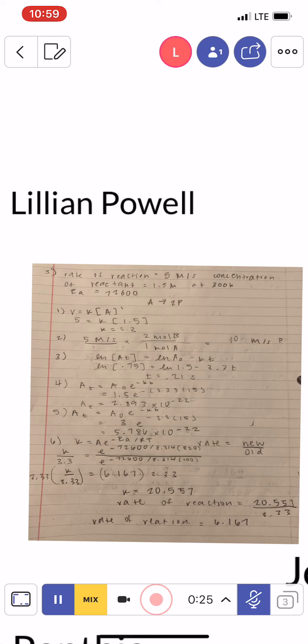in order to find the rate constant K, I used the equation R equals K times concentration of A raised to 1, because it's a first order problem. I was given R, which is the rate of reaction, so that's 5 equals K, and then the concentration of 1.5, and then I just solved that to get K equals 3.3 repeating. And then for 2,